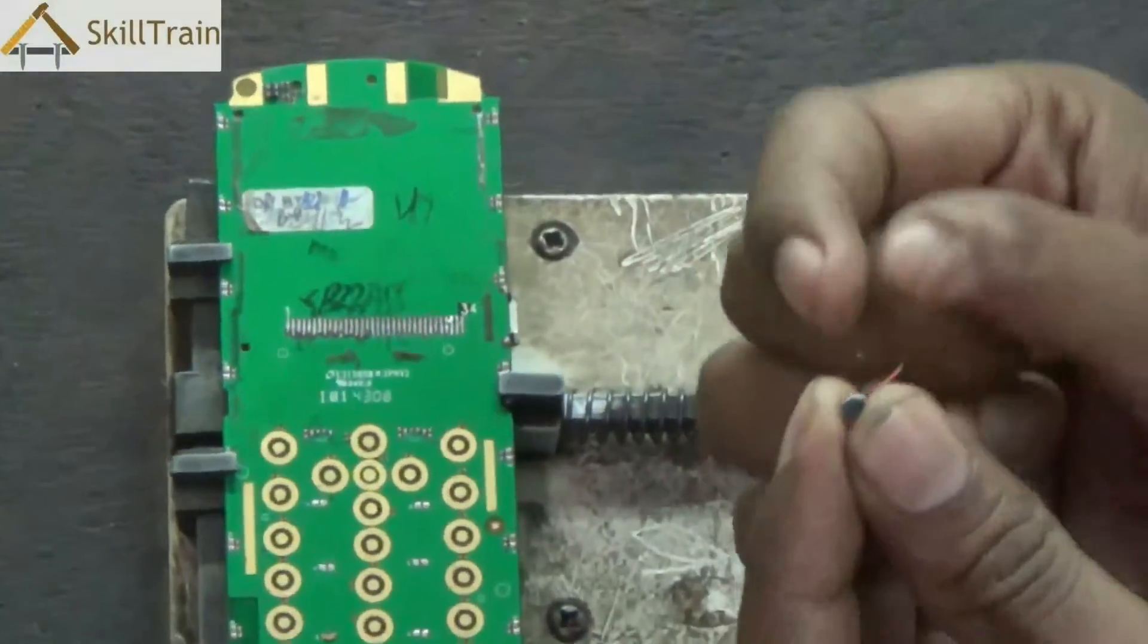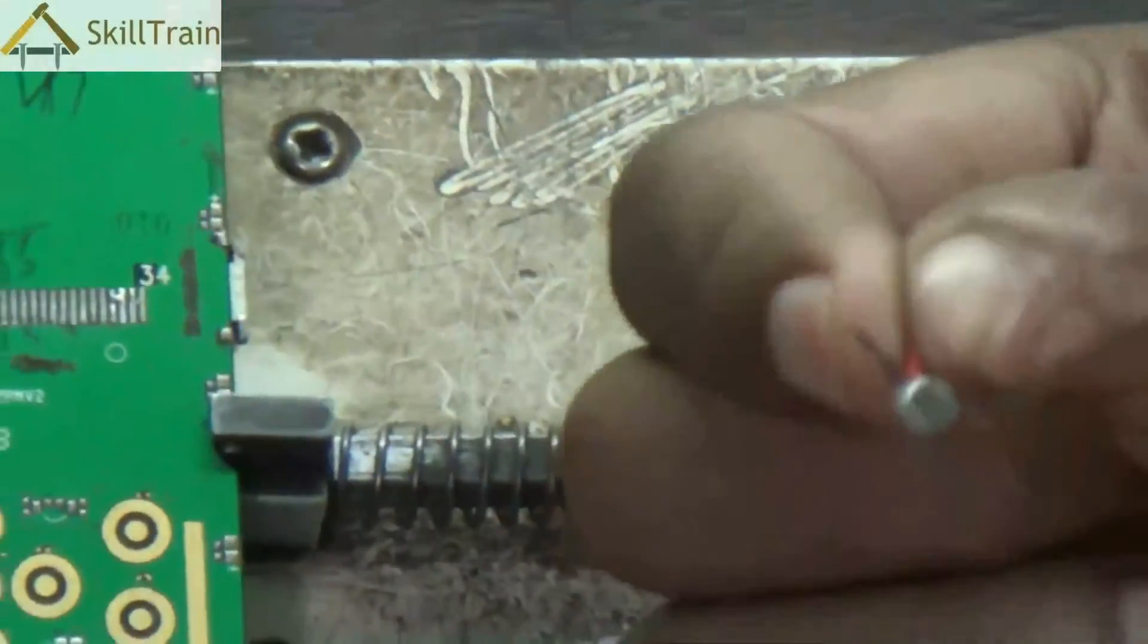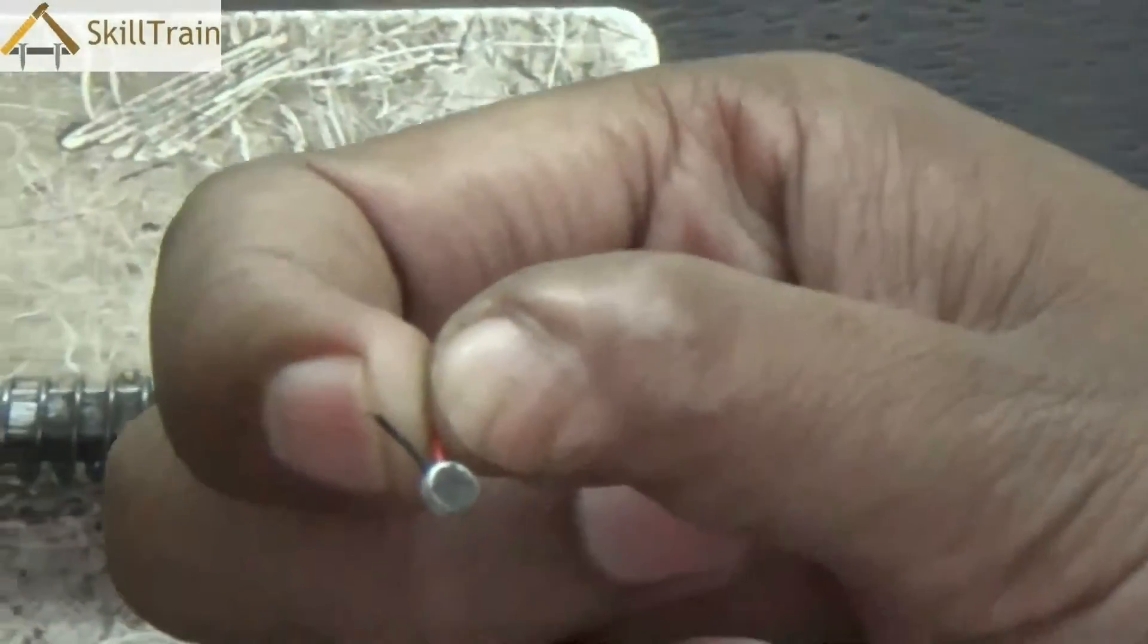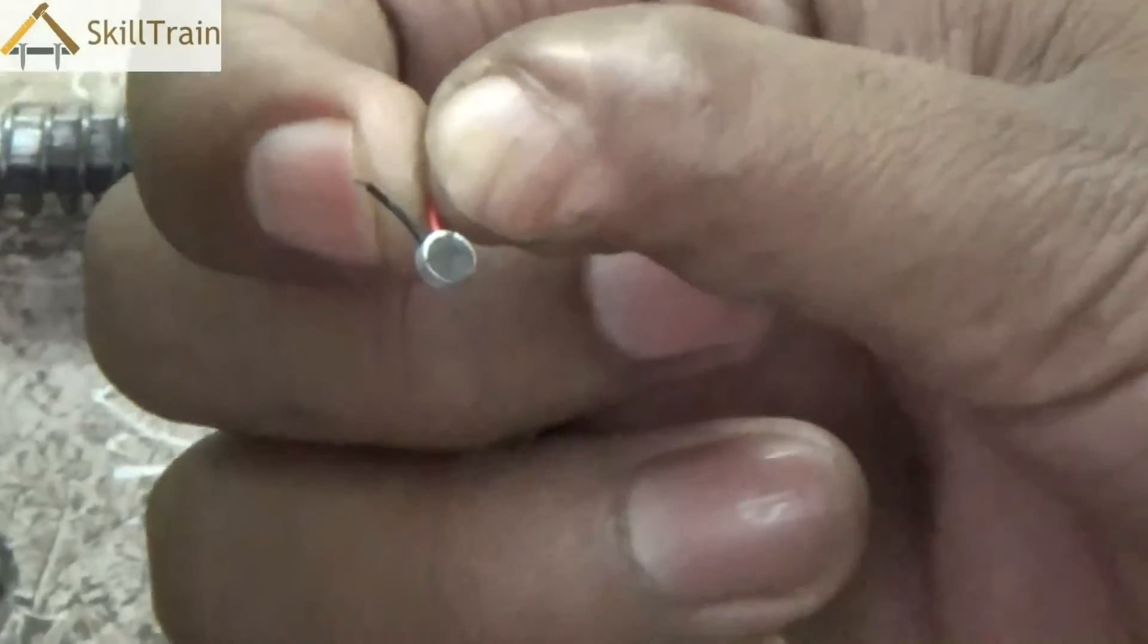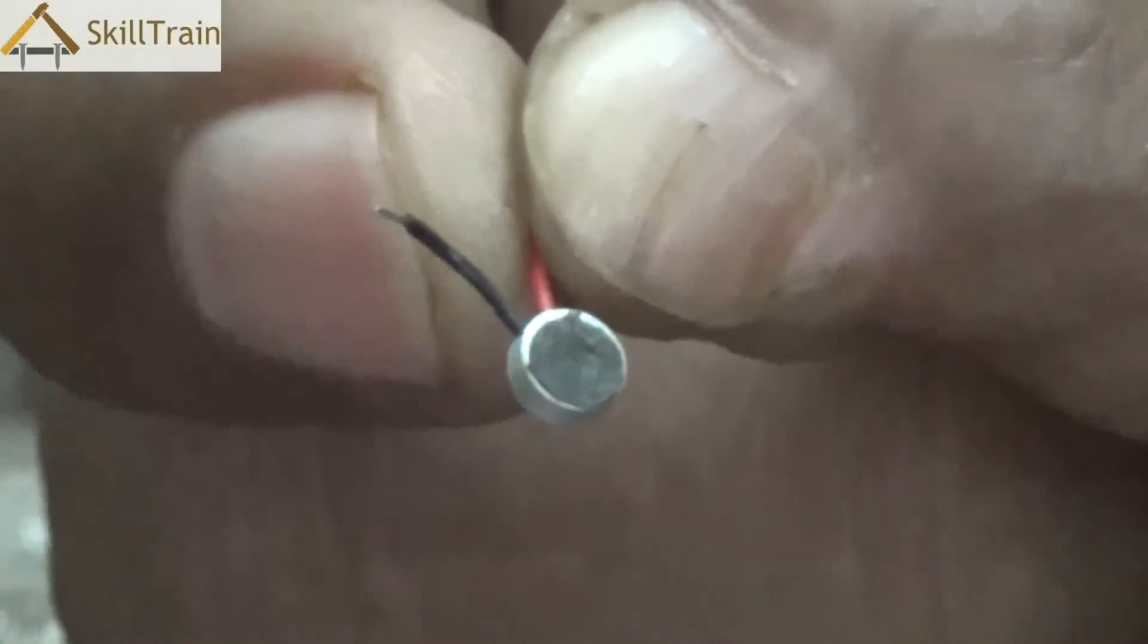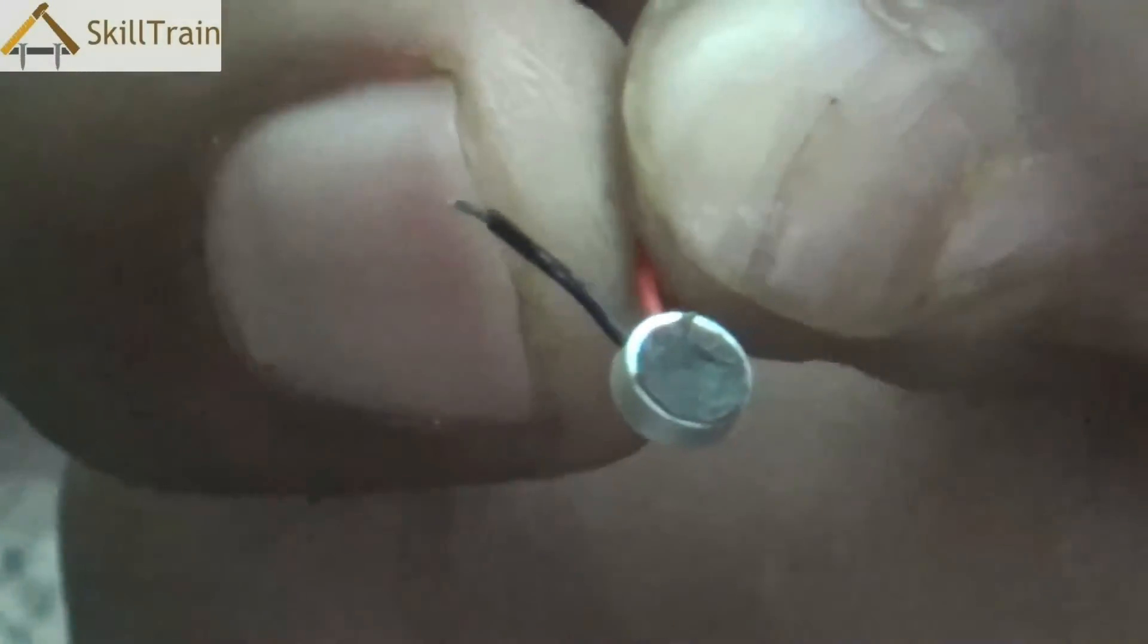This is how a mic looks like. It's a very minute component which is placed mostly at the bottom part of your mobile phone. We did see some earlier videos where we saw the microphone tip and the slot. It's placed at the bottom part of the mobile phone.